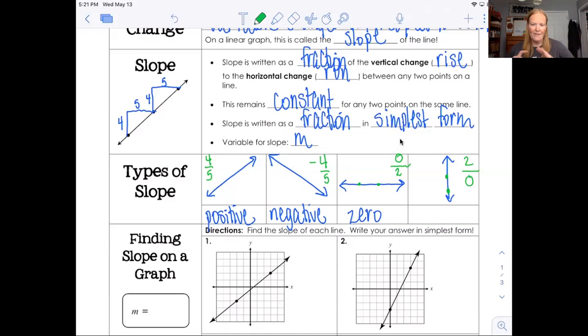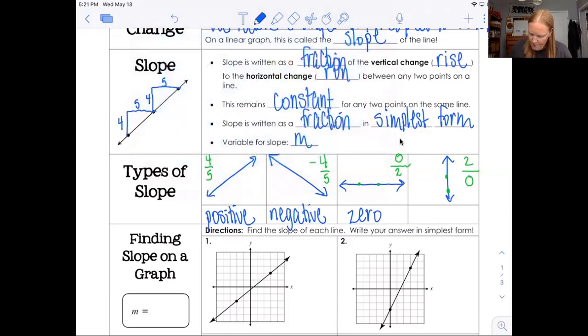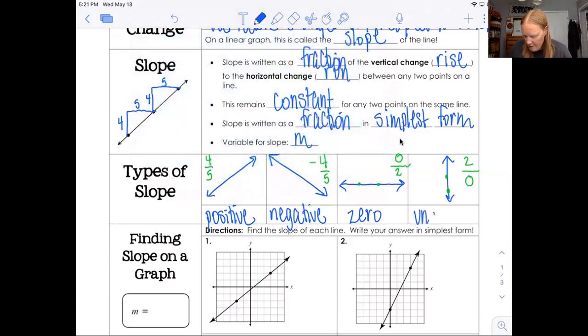So this type of slope has a word as its name. Well, they all have words, I guess, but we call this undefined. There is no definition for anything divided by 0. So we call it an undefined slope.